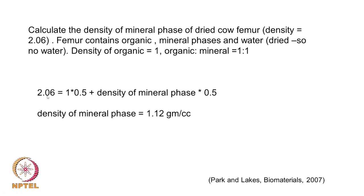The density of the femur is 2.06, and the density of organic is 1 into 0.5, and the density of the mineral phase — what we have to calculate — into 0.5. The density of the femur equals the volume fraction of organic times density of organic, plus the volume fraction of mineral times density of mineral. Water is ignored because it is dried. So the density of the mineral phase is 3.12 grams per cc.